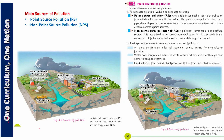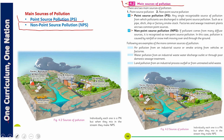Dear students, we have seen the pollution types — point source and non-point source pollution. These are the important things. When one of the sources of pollution can cause pollution, we have point source pollution.